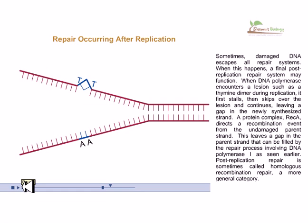A protein complex, REC A, directs a recombination event from the undamaged parent strand. This leaves a gap in the parent strand that can be filled by the repair process involving DNA polymerase I. Post-replication repair is sometimes called homologous recombination repair, a more general category.